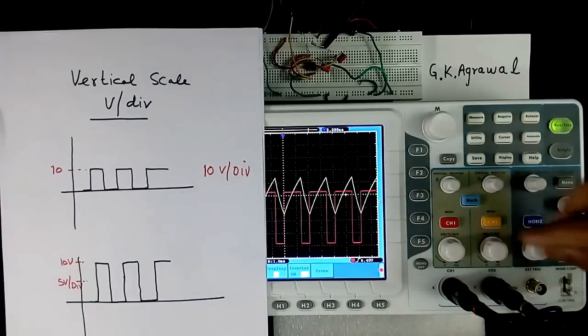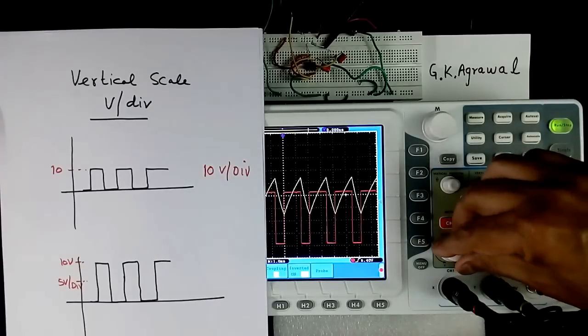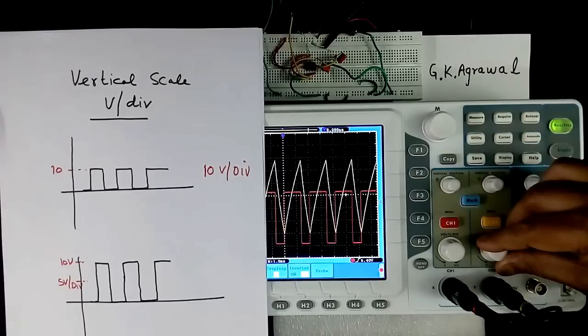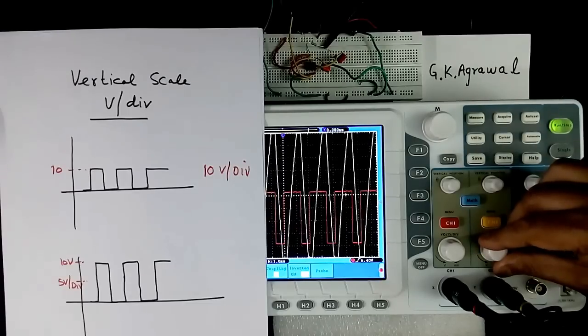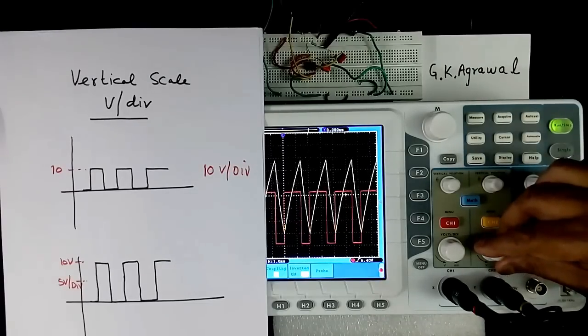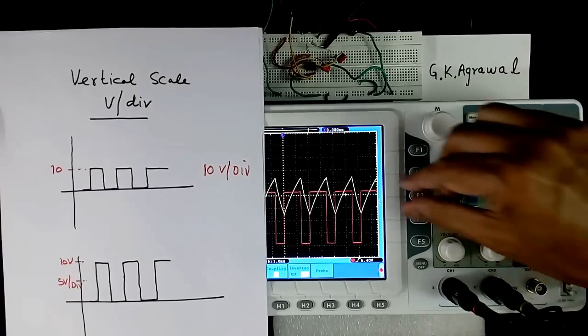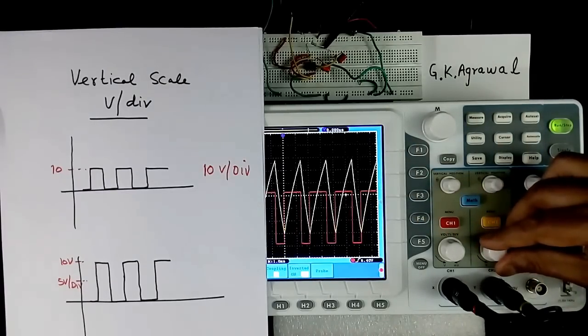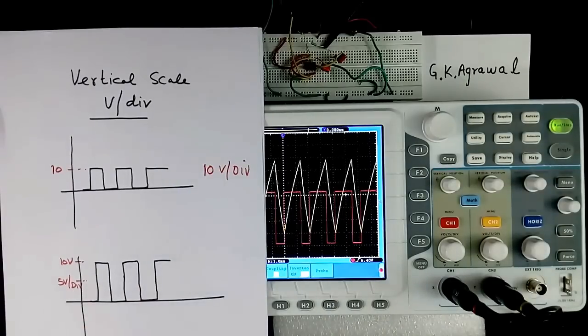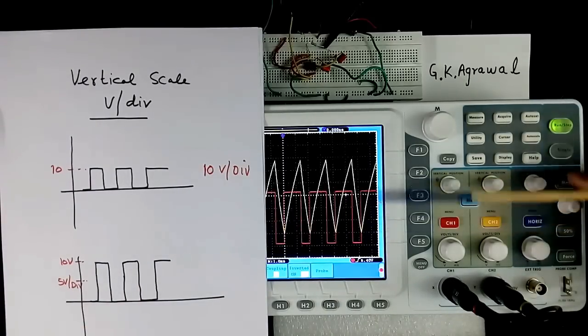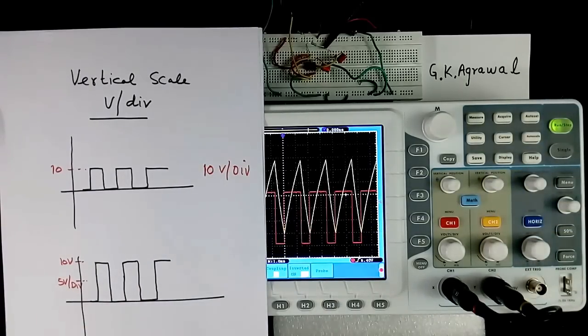Similarly yellow one, second channel. Both separate we can select. This is one. This is another. See yellow second channel. I am controlling Y scale, volt per division. This is more volt per division. This is less volt per division. Less volt per division means it will look bigger. Wave shape look bigger.